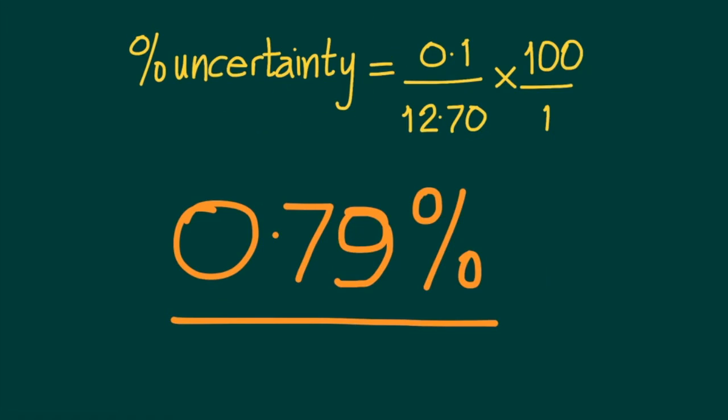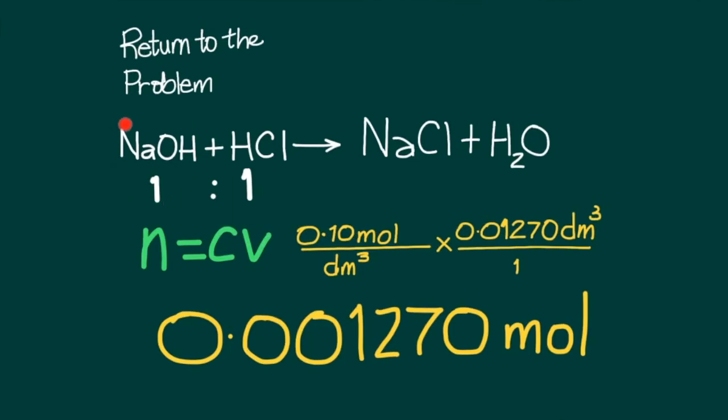The percentage of uncertainty associated with this measurement is 0.79%. If we know the number of moles of sodium hydroxide required to neutralize the hydrochloric acid, then we can assume that the 10 milliliter aliquot of hydrochloric acid contains that number of moles, because we have the ratio of 1 to 1.